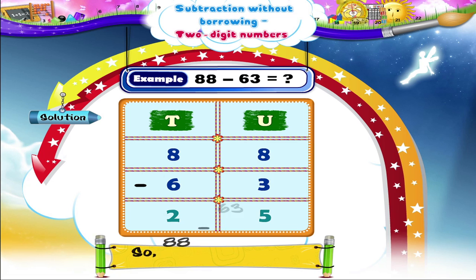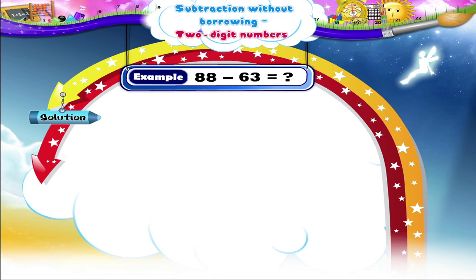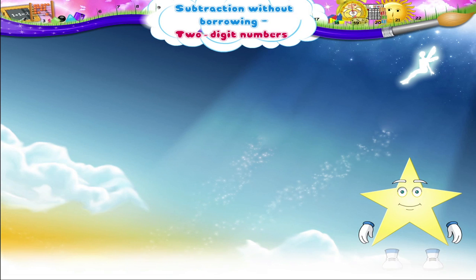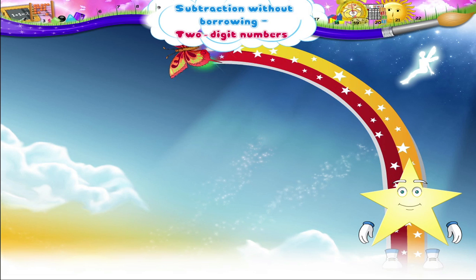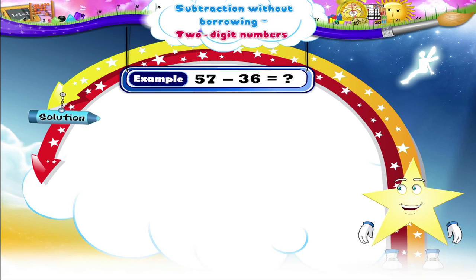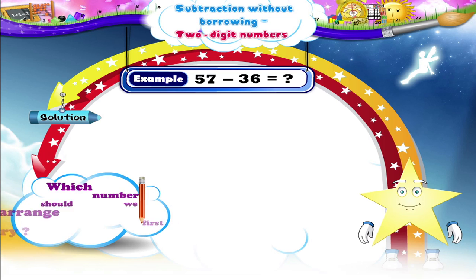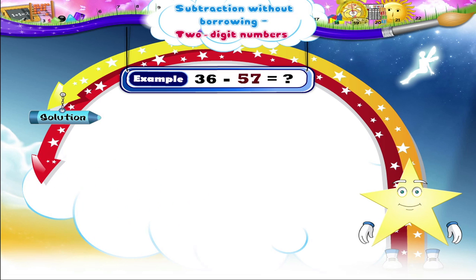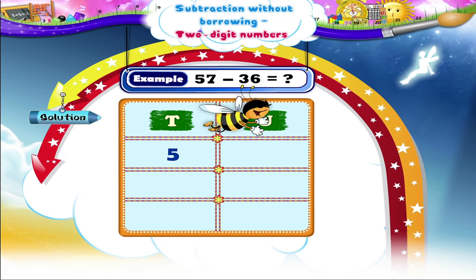Now, let's solve the last example, Starry. Subtract 36 from 57. Which number should we arrange first, Starry? Yes, 57. Write 5 in the tenths column and 7 in the units column. Now, let us arrange the number 36.